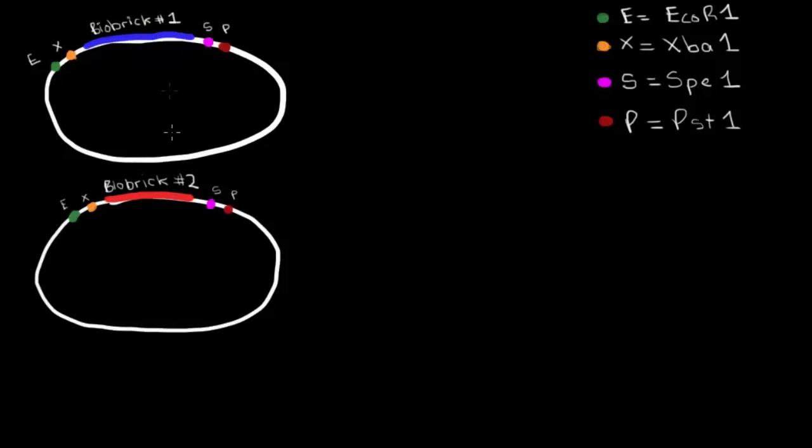So here I've shown two different biobricks, and biobricks can be just about anything. It could be a promoter, a ribosome binding site, the entire gene for a biosensing protein, and every biobrick is flanked by these two restriction enzyme sites: ECOR1, XPA1, SPE1, and PST1 on either side.